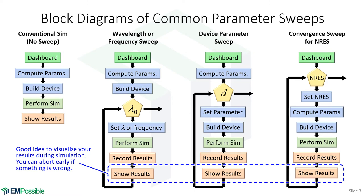I recommend showing results while you're simulating — I think this is extremely good practice. The transfer matrix method is so fast you won't feel the pain of this, but when you get to other methods in 2D and 3D, they become much slower and a parameter sweep could take a day or two. It doesn't make sense to wait that entire time before looking at intermediate results. If the first two points tell you something's going wrong, you should stop, fix it, and rerun. If graphics slow things down and you have 10,000 points, update results every 100 points or every 30 seconds.